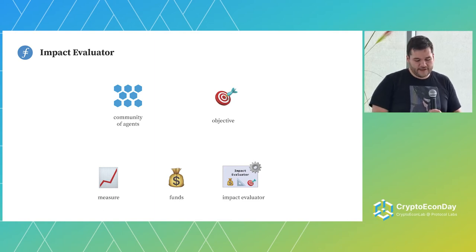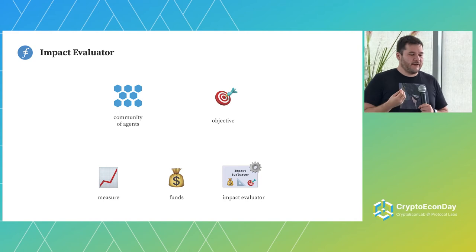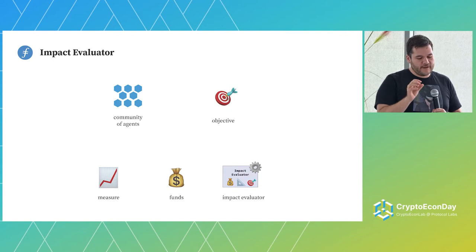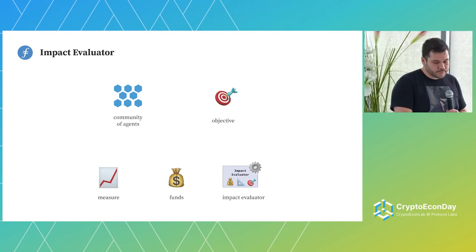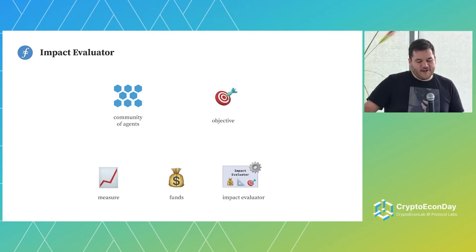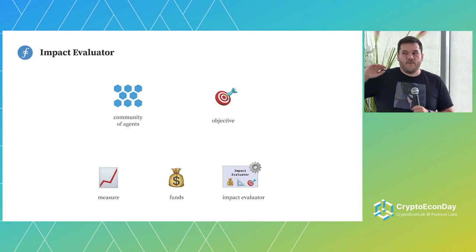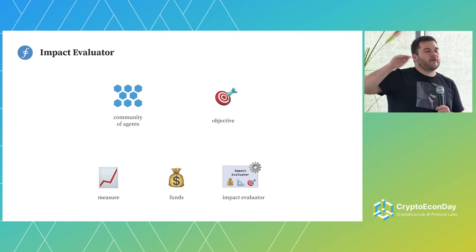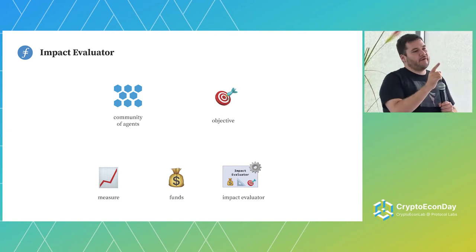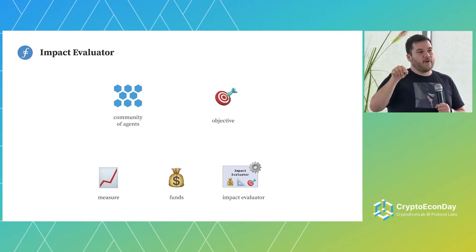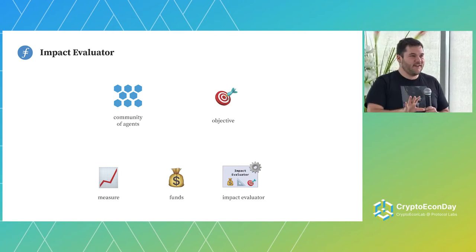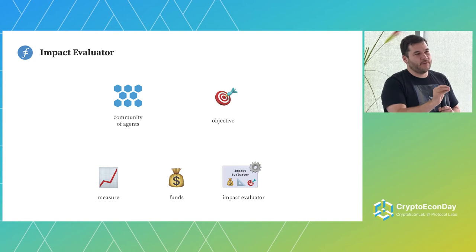This sounds pretty basic, and impact evaluators are basic, but the key point is that this very simple mechanism can cause massive levels of impact. To motivate that: the Bitcoin network and all of the hash rate and all the power consumption is driven by a single impact evaluator — the block reward of Bitcoin, rewarding the hash rate contributed on a per-block-time basis. That's the level of power you can get out of these very, very simple mechanisms.